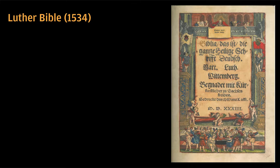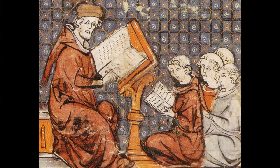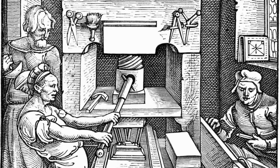Another major change that Luther brought about was the translation of the Bible from Latin into German, and later, other commonly spoken languages. Prior to the Protestant Reformation, the language of the Church was Latin, including the celebration of the Mass. Priests were educated in Latin and were widely held to alone be capable of interpreting Scripture. Eventually, the Bible was translated into all other major European languages, and, coupled with the spread of the printing press, helped to liberate the Bible and its teachings from the monopoly of the Catholic priesthood.